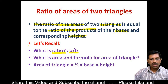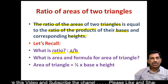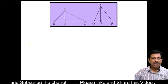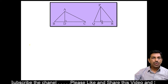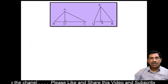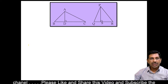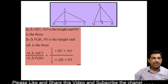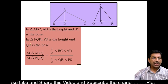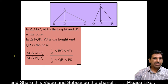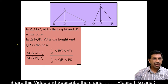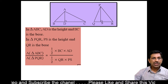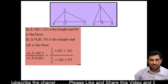So let us start how to find the ratio of the areas of two triangles. Suppose that I have two triangles ABC and PQR. In triangle ABC, AD is the height and BC is the base. And in triangle PQR, PS is the height and QR is the base.